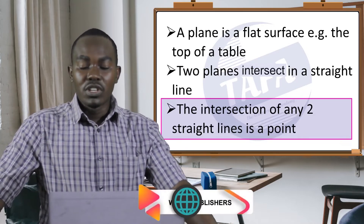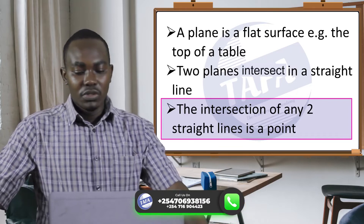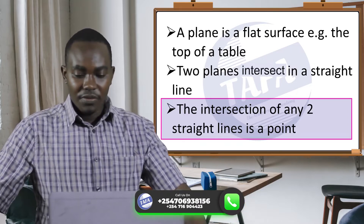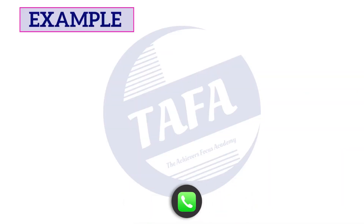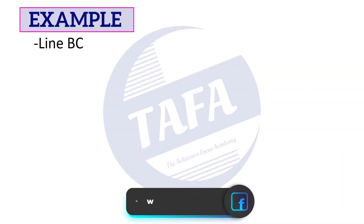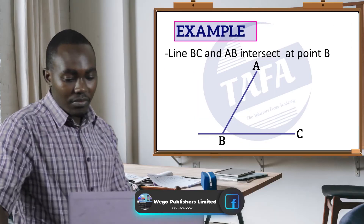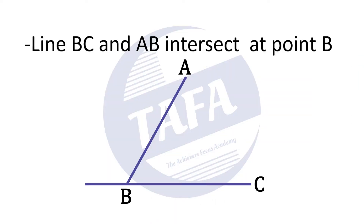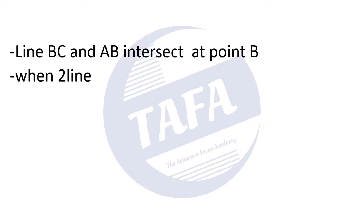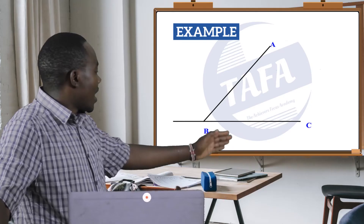The intersection of any two straight lines forms what we call a point. For example, line AB and line BC meet at point B — so BC and AB intersect at point B. When two lines meet, they form an angle at a point.